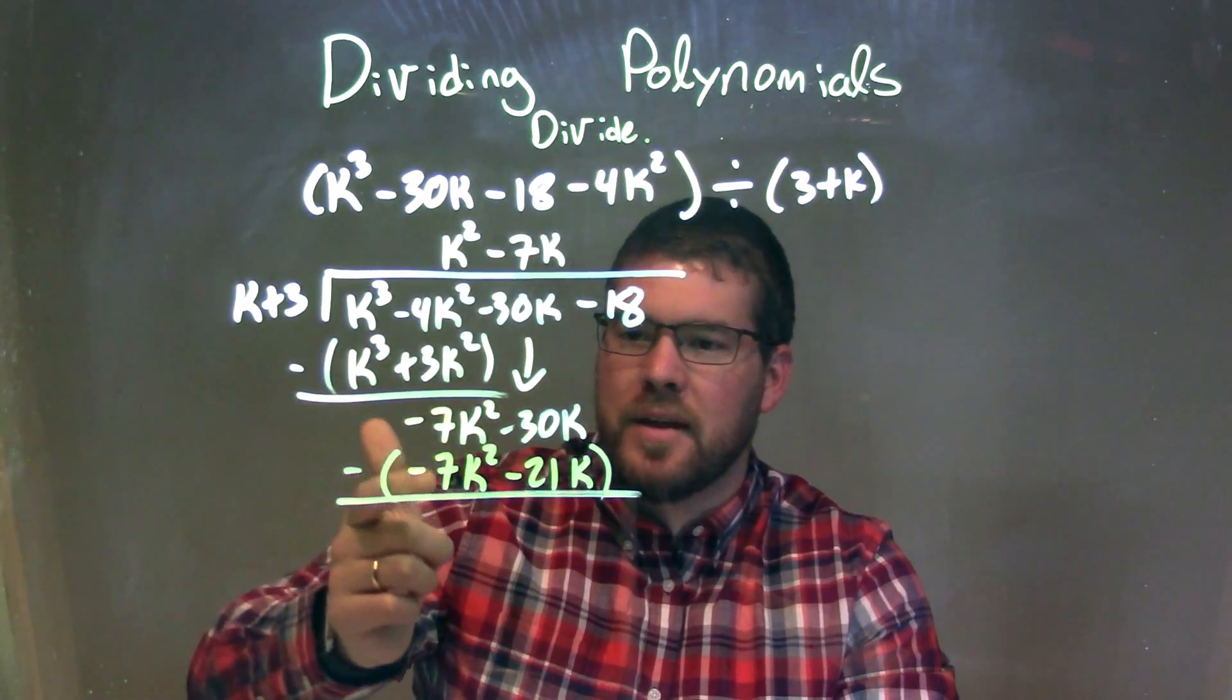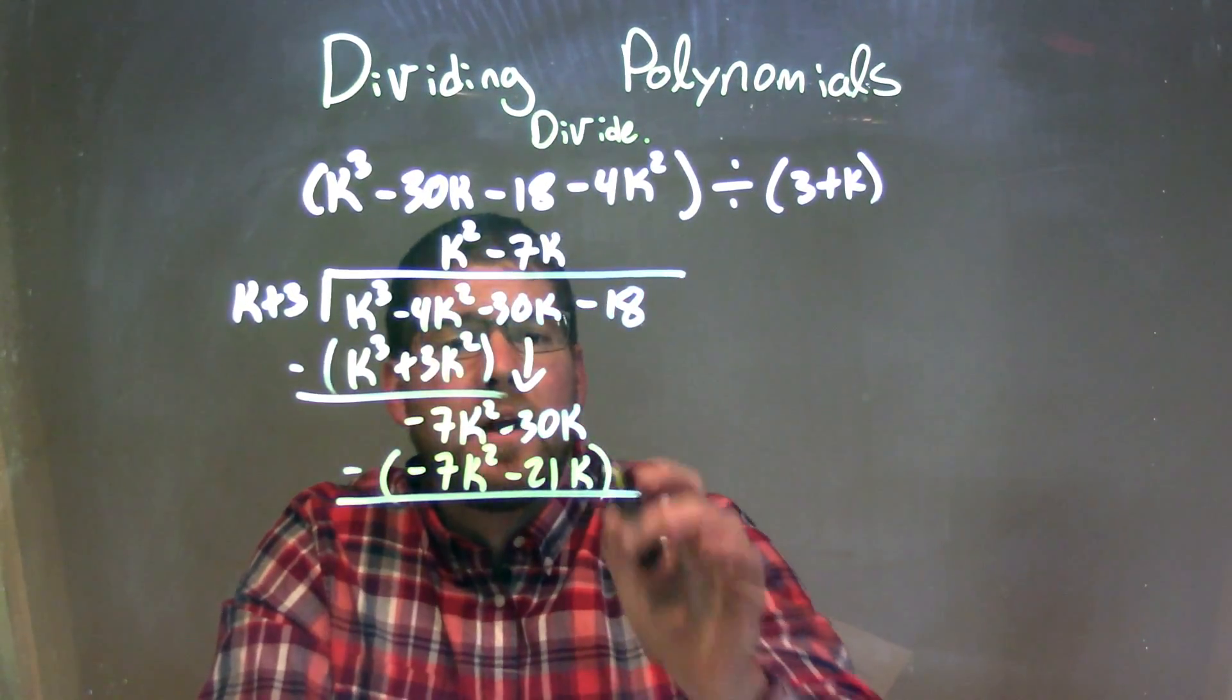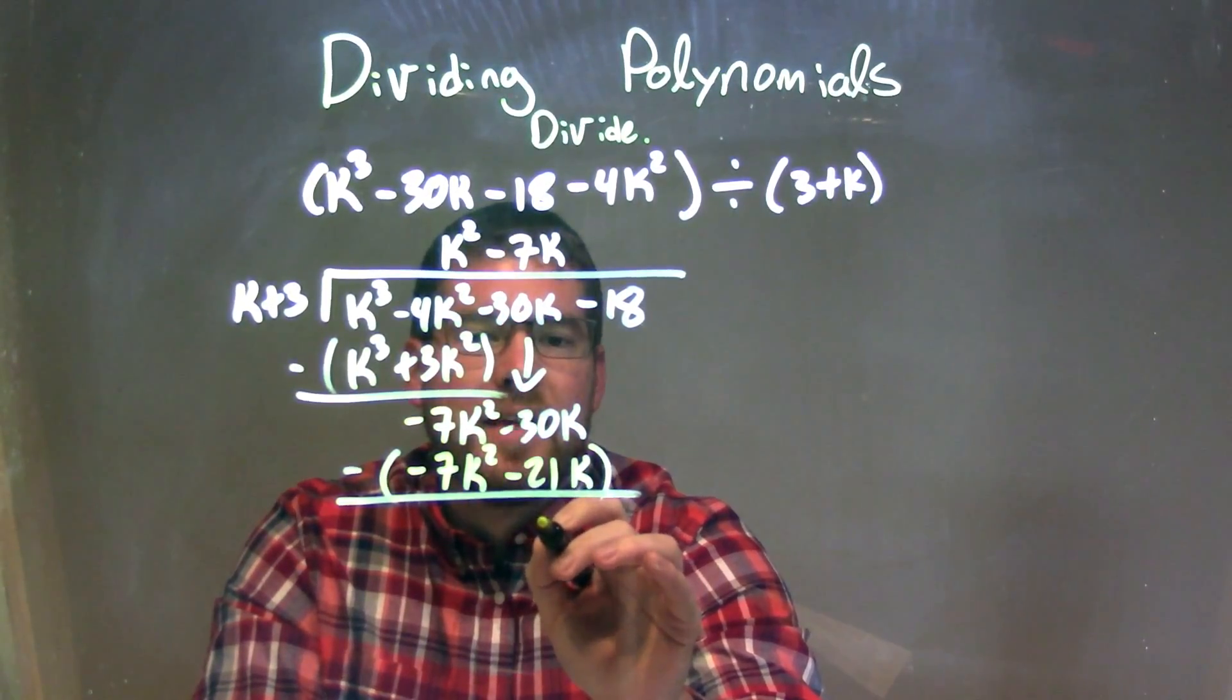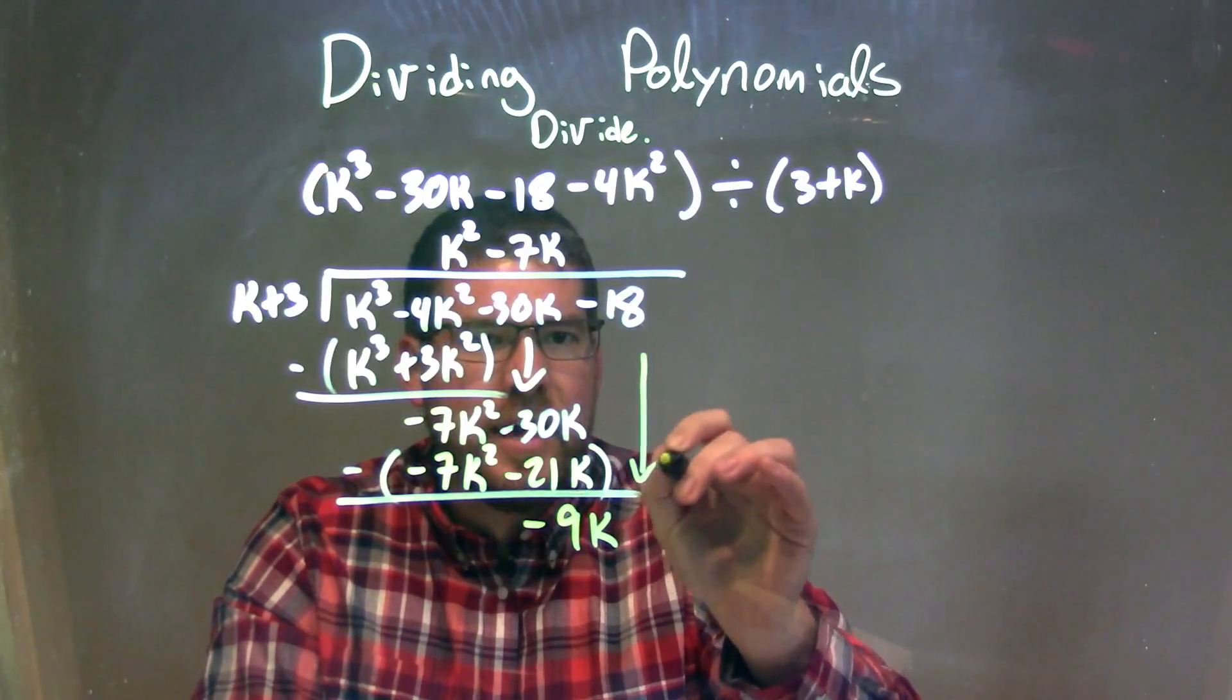Minus 7k squared minus a negative 7k squared is like adding a positive. They should eliminate. It has to be 0. And minus 30k minus a negative 21k is like adding a positive 21k, and that's a minus 9k right there. I'm going to bring down now the minus 18.